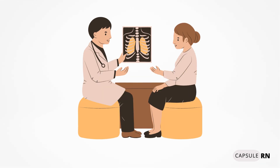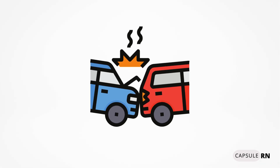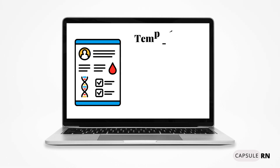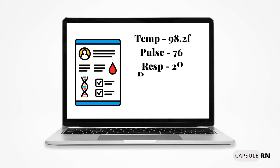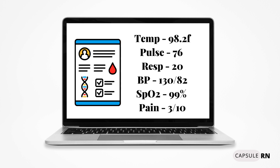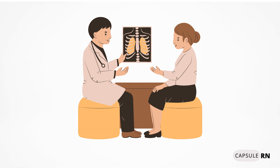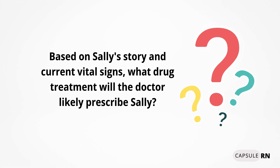Meet Sally, a 32-year-old patient at the urgent care complaining of left rib pain. Sally states she got in a minor fender bender about two hours ago. The vital signs the nurse took at the beginning of Sally's visit were a temperature of 98.2, a pulse of 76, respirations of 20, blood pressure of 130 over 82, SpO2 of 99%, and a pain level of 3 out of 10. It should also be noted that the x-ray the doctor took showed no rib fractures. Based on Sally's story and current vital signs, what drug treatment will the doctor likely prescribe Sally?